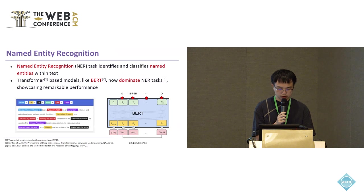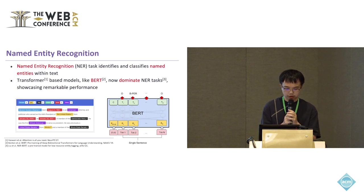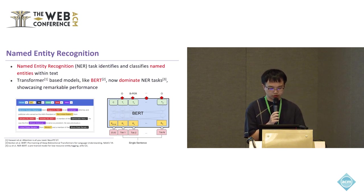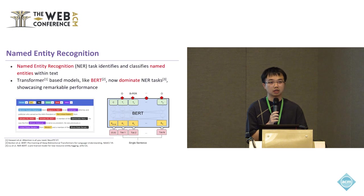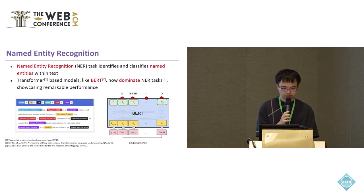Transformer models introduced in the paper Attention is All You Need have revolutionized NLP tasks through their ability to capture complex dependencies in text through self-attention mechanisms. BERT, which is bidirectional encoder representations from transformers, introduced by Devlin et al. in 2018, has set new benchmarks in various NLP tasks, including NER tasks. The BERT architecture considers context from both left and right of a word simultaneously, leading to a deeper understanding of word semantics.